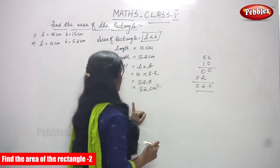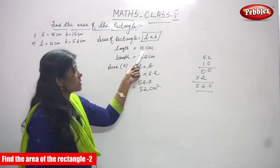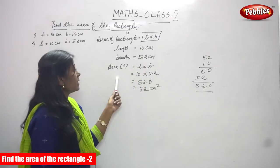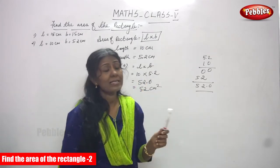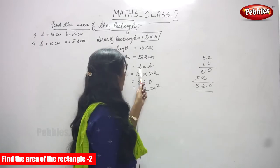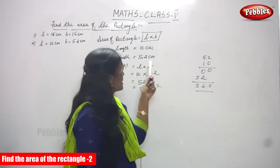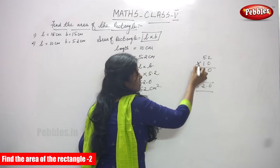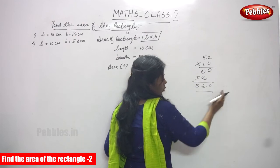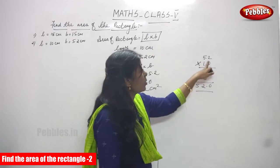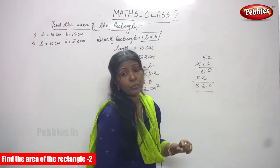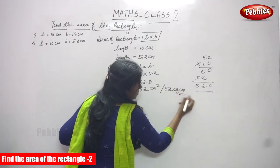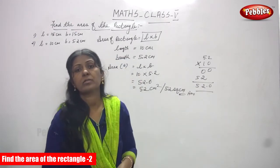To explain once more: area of the rectangle = L into B. Length is 10 cm and breadth is 5.2 cm. Area is represented by capital A, and the formula is L into B. Substituting — 10 into 5.2 — gives 52.0. Since there is only one decimal place, we place the point from the right and cancel the trailing zero. The answer is 52 centimeter square or 52 sq. cm — both are correct. Choose whichever is easy for you.